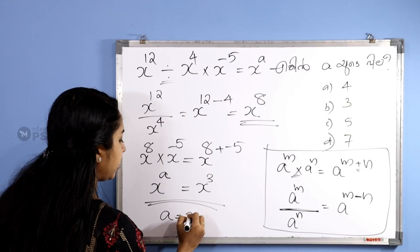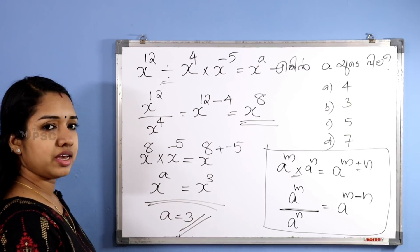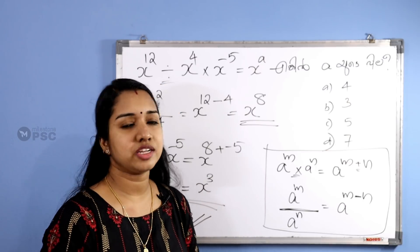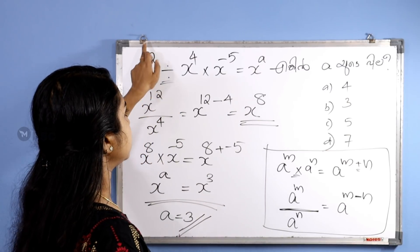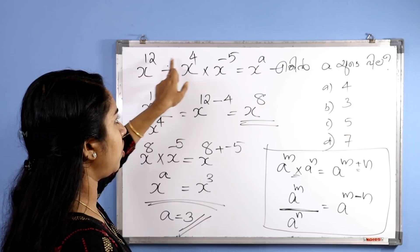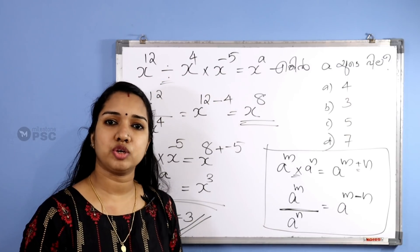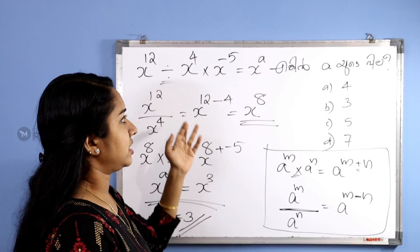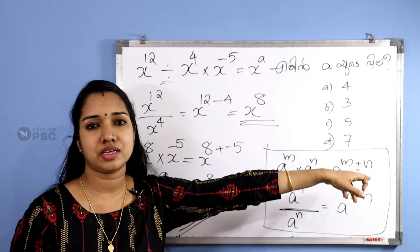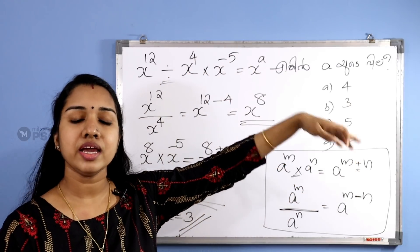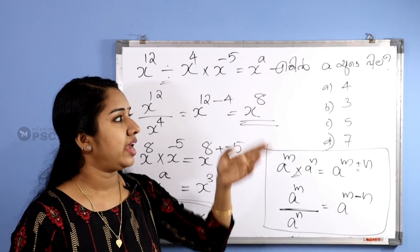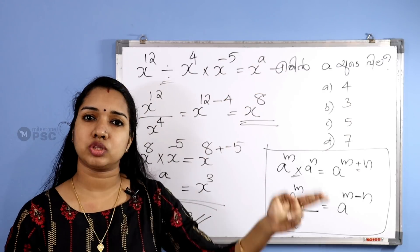So x raised to a equals x raised to 3, therefore a equals 3. Step by step: x raised to 12 divided by x raised to 4 gives x raised to 8; then x raised to 8 into x raised to minus 5 gives x raised to 3. The answer is 3.